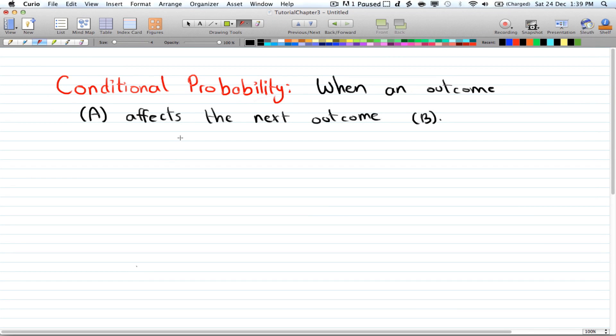Welcome to your 10th tutorial in Discrete Math 2. Today I'm going to talk about conditional probability. Conditional probability is when an outcome A affects the next outcome B.